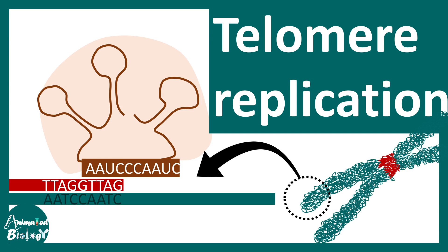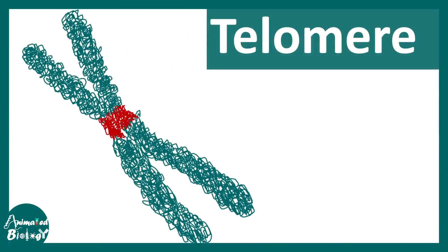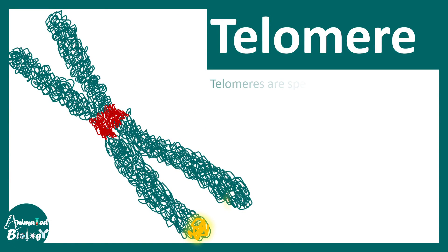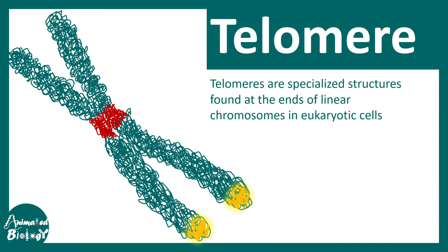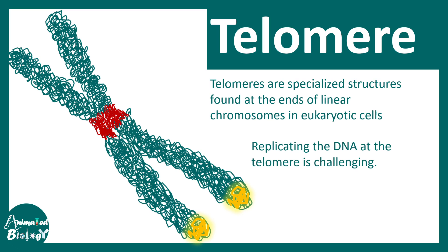In this video we'll talk about telomere replication. Telomere is present at the ends of the chromosome and it's a specialized structure found in eukaryotic chromosomes. Replicating the DNA at the telomere region is quite challenging. In a moment we would learn why it is so challenging and how this challenge is overcome by a eukaryotic cell.